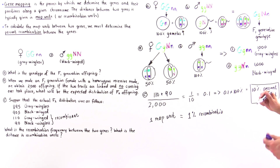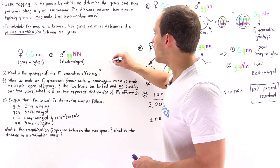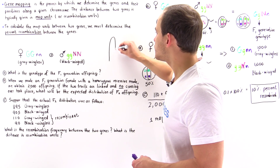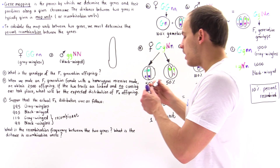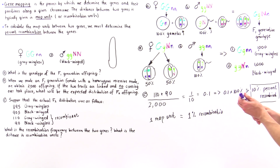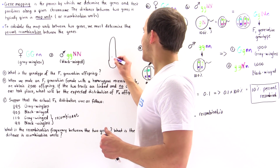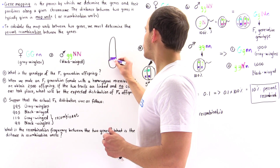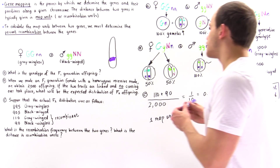What that means is, if we examine our chromosome, along that chromosome we can locate these two genes, with 10 map units of distance between them.